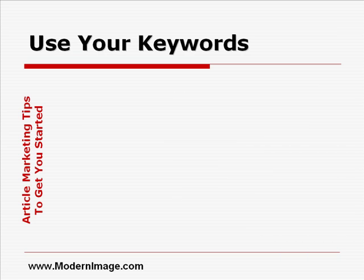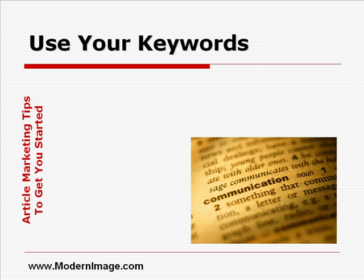Next, use your keywords — and I'm not being sarcastic here. I've consulted with a lot of entrepreneurs who thought that a webpage, an article, or a PPC ad was optimized for a particular keyword when, in fact, it was not at all. The biggest reason is that they just weren't sure what to do with the keywords once they found them. For article marketing, you want to put your keywords in your article title as close to the beginning of the title as possible, just like you do for a webpage. Then you want your keywords to appear as close to the beginning of your first paragraph as possible, and repeat it one time in that first paragraph.